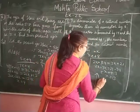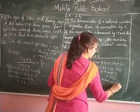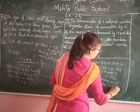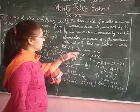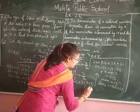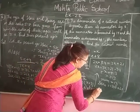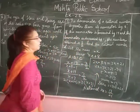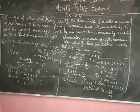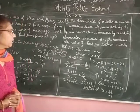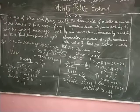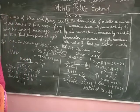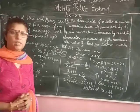The numerator is equal to 13 and the denominator is equal to 13 plus 8, which is 21. Therefore the rational number is numerator upon denominator, that is 13 upon 21. Now we have completed chapter number 2. In the next video we will do chapter number 3.